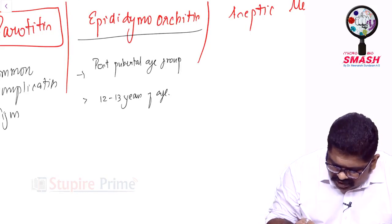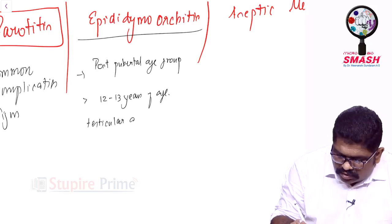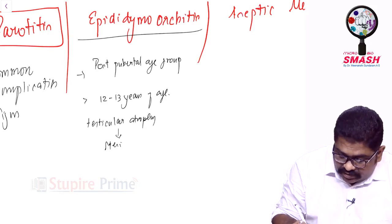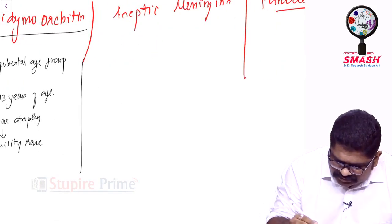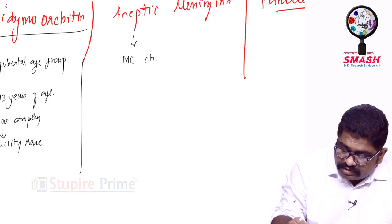Remember, you will be having testicular atrophy, but sterility is very rare. In case of aseptic meningitis, this is most commonly found in children.